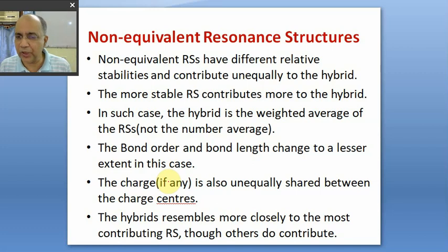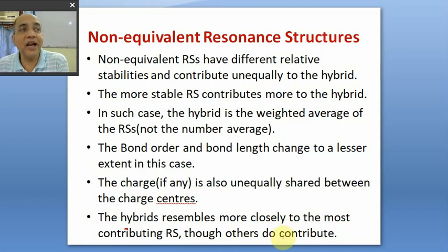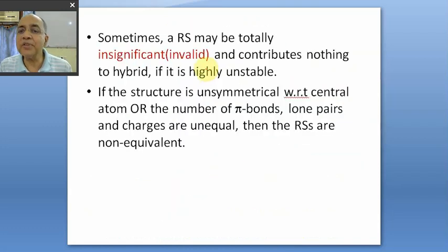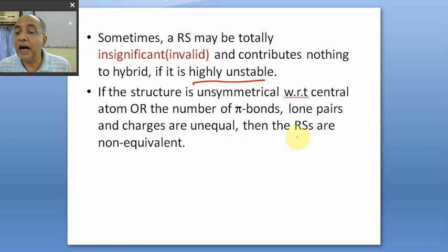The hybrid resembles more closely the most contributing RS, though others do contribute. Because of their contribution, the main hero — the bond order — gets changed, however small the change may be. Sometimes an RS may be totally insignificant and contribute almost nothing to the hybrid — this happens when it is highly unstable. If the structure is unsymmetrical with respect to the central atom, or the numbers of pi bonds, lone pairs, or charge are unequal, then the RSS are non-equivalent.